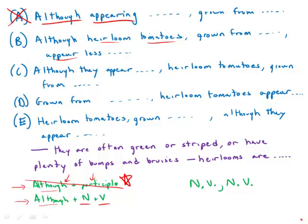In C we have although they appear—bona fide noun and verb. But then we have this other noun, heirloom tomatoes, just hanging out in the middle of the sentence. This noun doesn't have any verb attached to it.